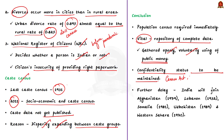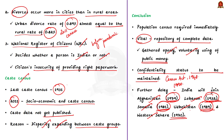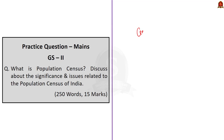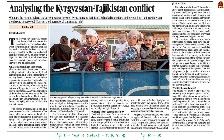If the census is further delayed, India will join countries which do not have census data since 1990. Examples include Afghanistan (1979), Lebanon (1932), Somalia (1985), Uzbekistan (1989) and Western Sahara (1970) — the years indicating from when these countries lack census data. In this discussion, we saw about census, who conducts the census exercise, its significance and the issues regarding census data. With these key takeaway points, let us move on to the next article discussion.